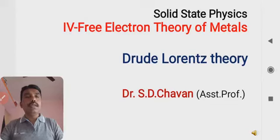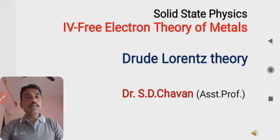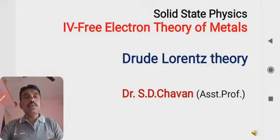Hello everybody. Once again, I am here for a new topic in the free electron theory of metals. In the previous session, we have seen what the outstanding properties of metals are. Here is another theory — the Drude-Lorentz theory — related to metals. Drude is one scientist and Lorentz is another scientist, and the combination of both gives us one theory.